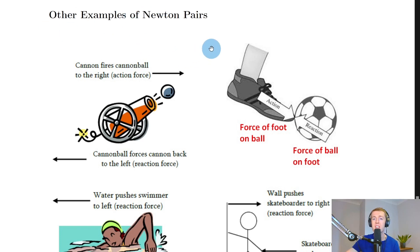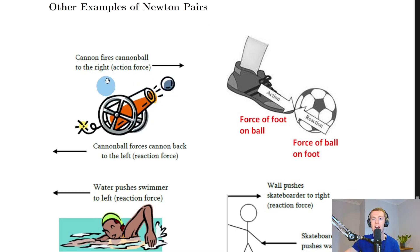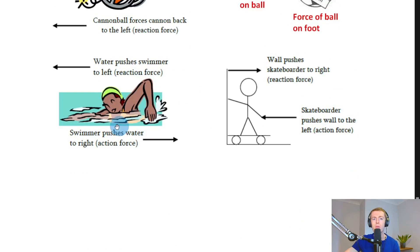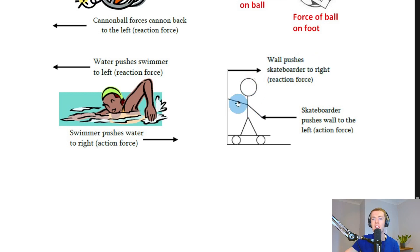Here are some other examples of Newton pairs. A cannon fires the cannonball to the right (action force) and the cannonball forces the cannon back to the left (reaction force). A foot on a football: the force of the foot on the ball is the action, and the force of the ball back on the foot is the reaction. A swimmer pushes water to the right (action) and the water pushes back on the swimmer to the left. A skateboarder pushes a wall to the left (action) and the wall pushes the skateboarder to the right (reaction).